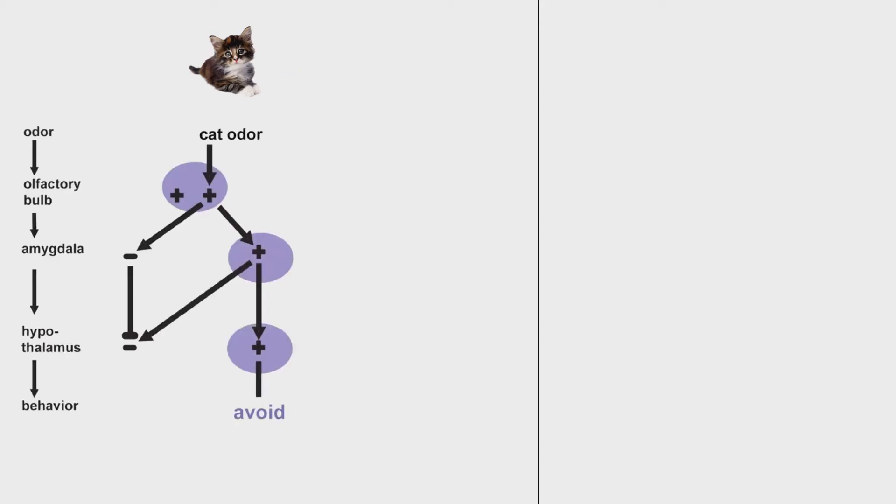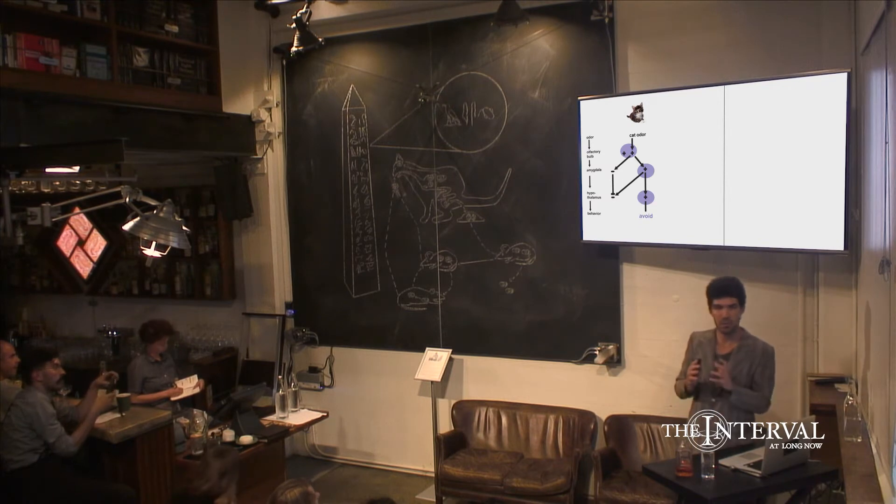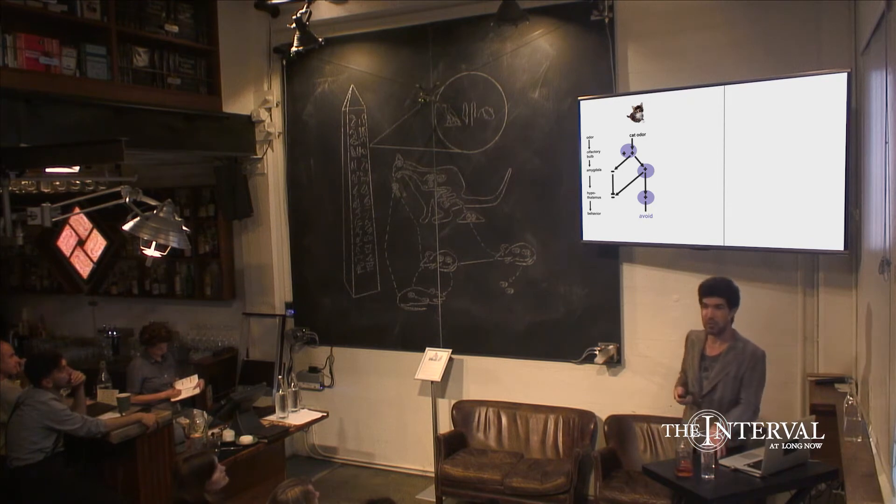If you look at patterns of neural activity in their brain, think of it like a pathway to ultimate behavior. There's a cat odor, the animal smells something, and neurons in the olfactory bulb respond specifically to that smell. This information gets pushed downstream to other brain regions, the amygdala and the hypothalamus, that ultimately output fear behavior.